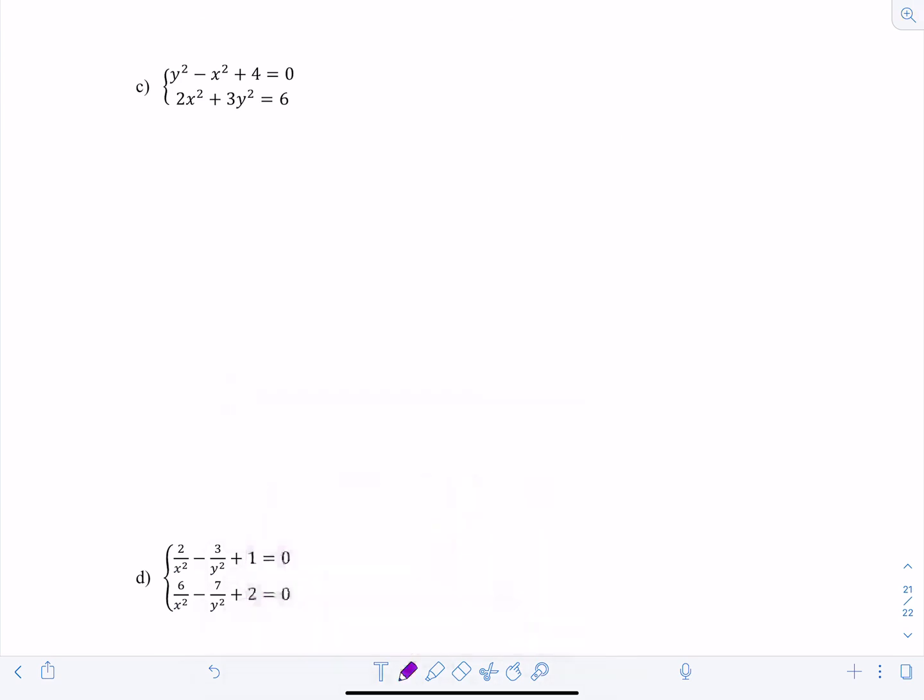The first equation, I'm going to rewrite it. It is negative x squared plus y squared equals negative 4. And notice I have a 2x squared plus 3y squared equals 6. So I'm going to multiply this by 2. And now it's going to become negative 2x squared plus 2y squared equals negative 8.